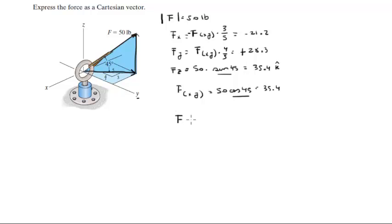So the Cartesian vector form of this vector is -21.2i + 28.3j + 35.4k. Final answer.